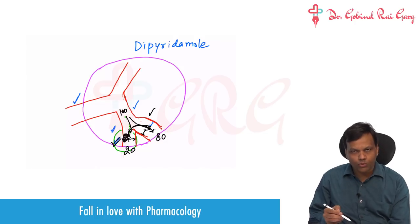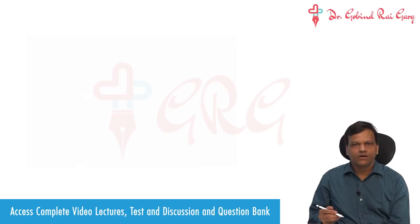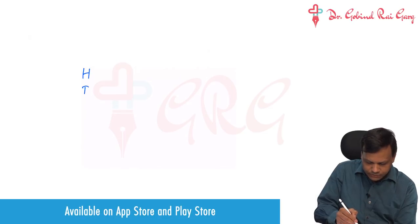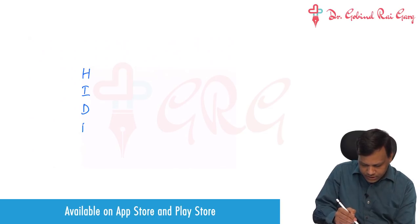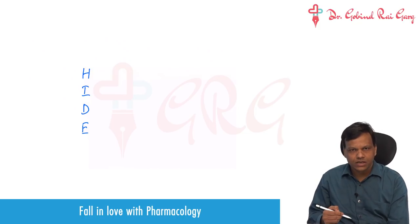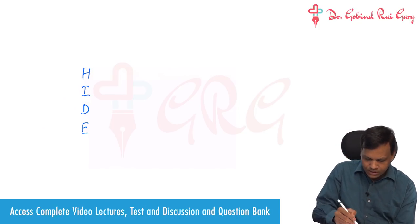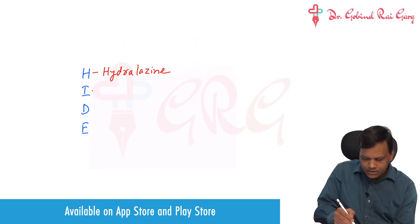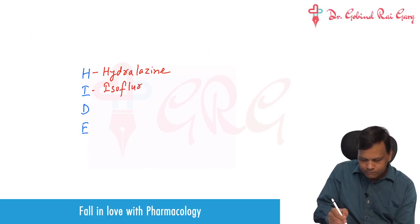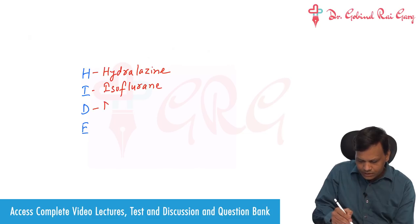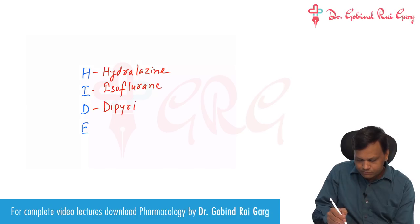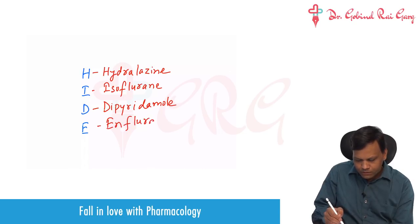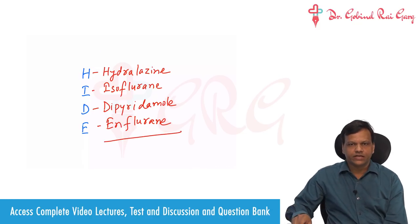Any drug which dilates only small vessels can show the coronary steal phenomenon. These drugs can be remembered using the mnemonic HIDE — because if a person has stolen something, they will hide it. H is for hydralazine, I is for isoflurane, D is for dipyridamole, and E is for enflurane. These are the main drugs causing the coronary steal phenomenon.